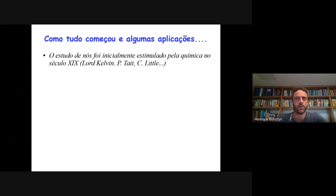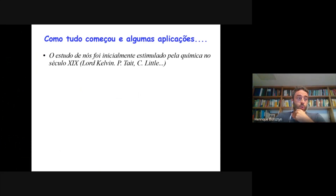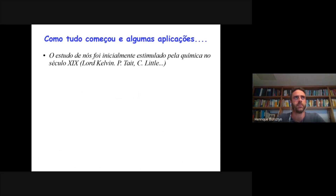Nessa época, existia uma teoria do éter, que existia uma certa substância que permeava tudo, que estava por todos os lugares, que era um meio de transmissão, por exemplo, da força gravitacional ou do eletromagnetismo. E elementos, átomos, seriam, de acordo com essa teoria do Lord Kelvin, nós nesse éter. Isso estimulou o estudo de nós — se você conseguisse catalogar os nós, você estaria fazendo essencialmente uma tabela periódica.